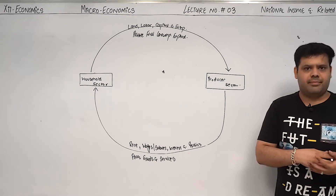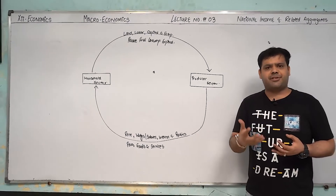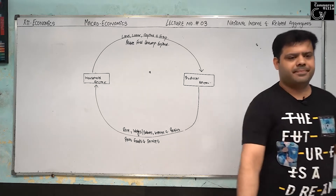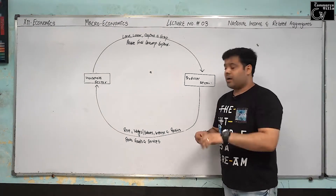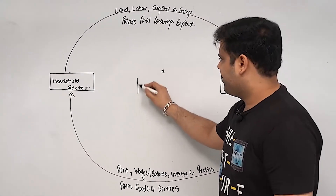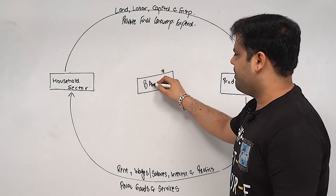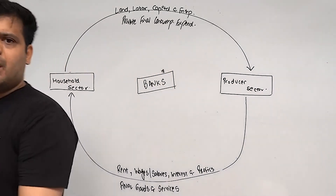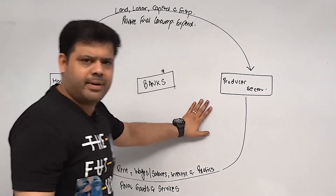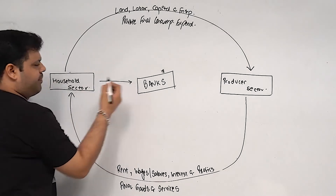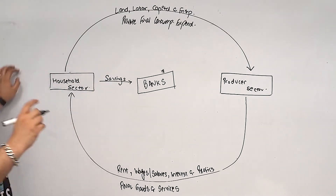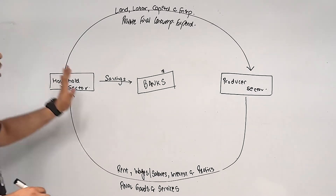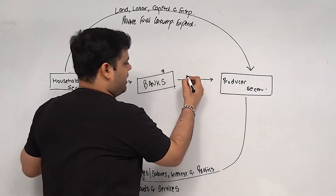If the two sector model will work out — money institutions, shares, debentures — people save money and will not spend all of it. Then how will this sector work out? Let's see that. If banks are included, the money flow speeds up and capital formation becomes very fast. Banks lend money kept by the household sector as savings to the producer sector. The government wants people to save money in banks, not at home.